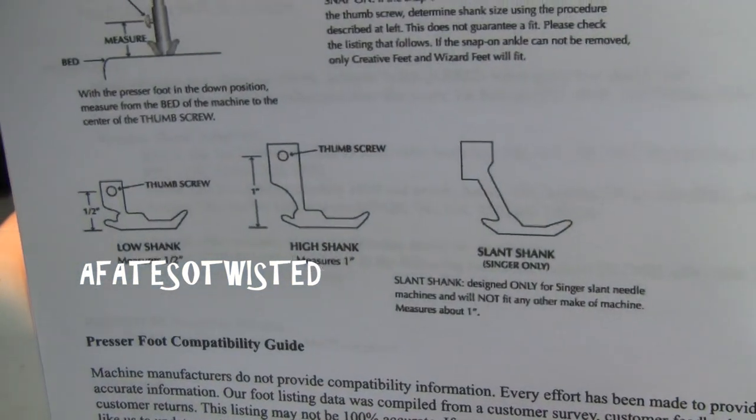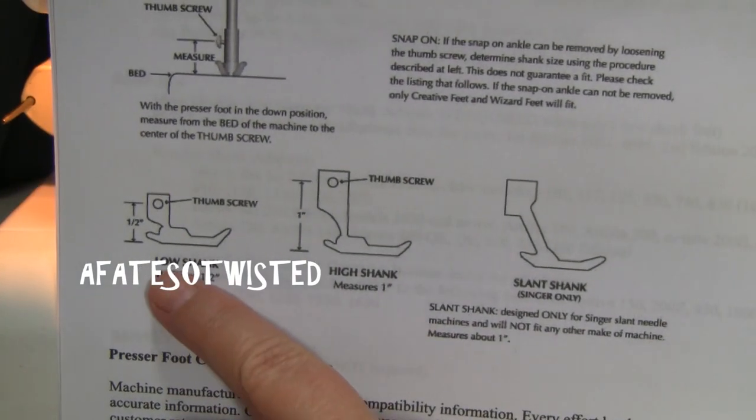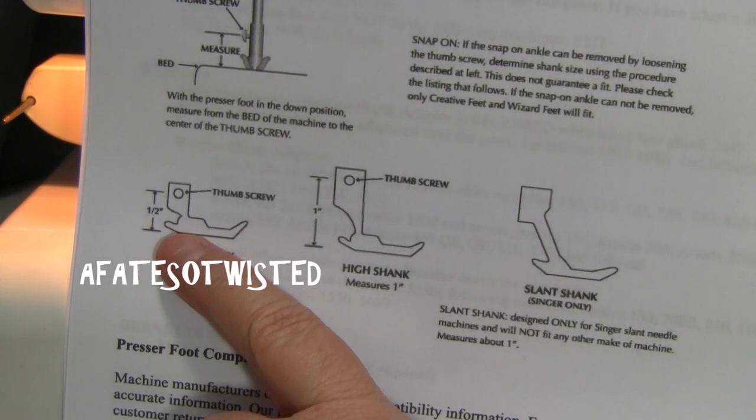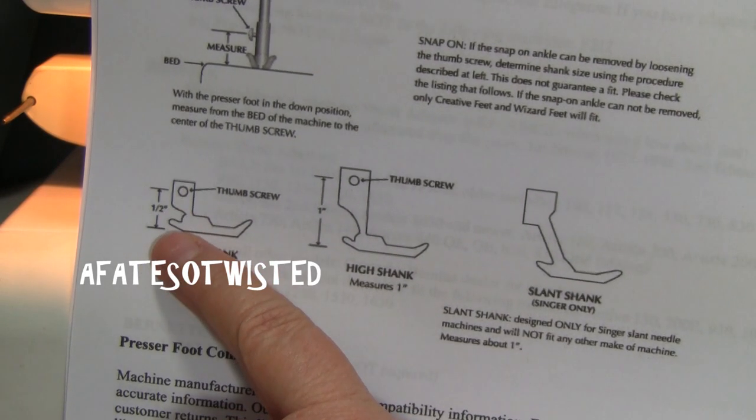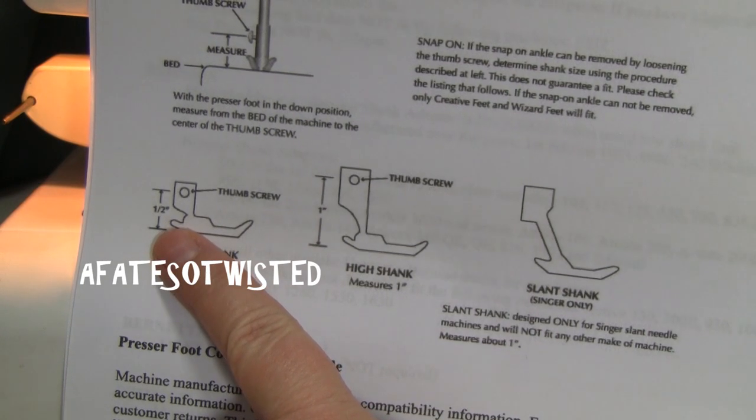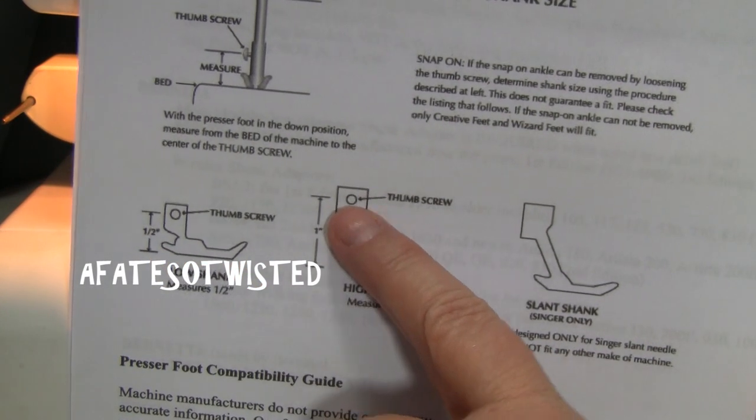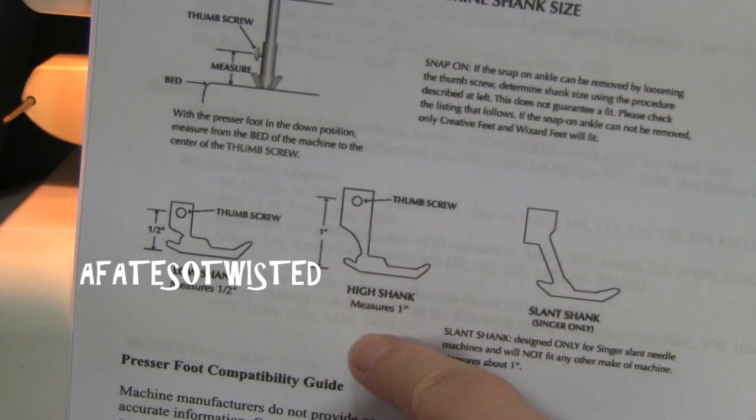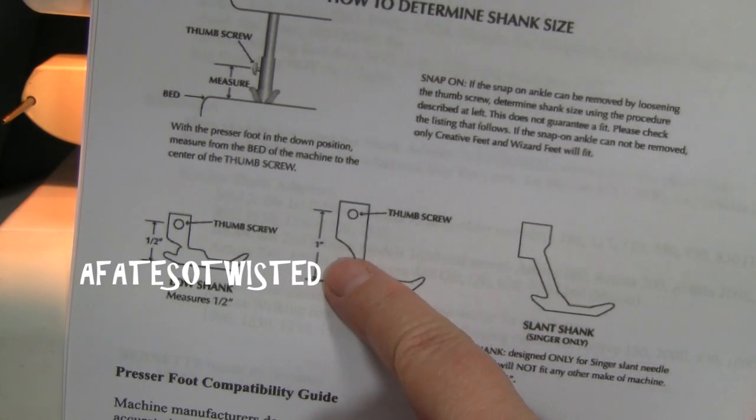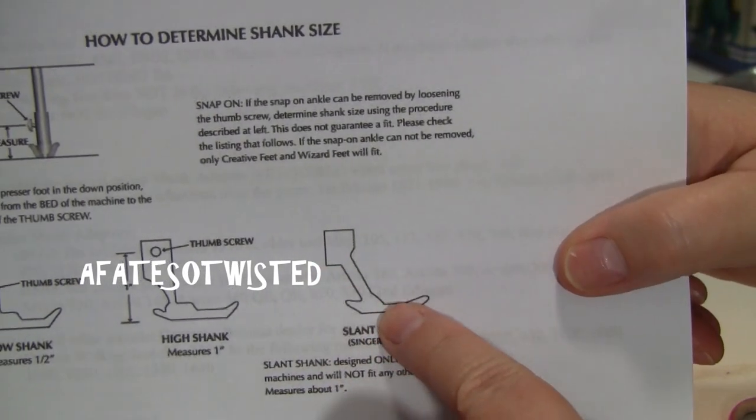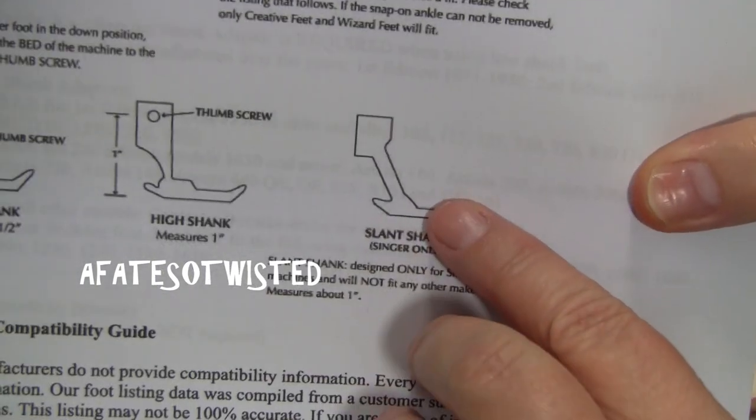Low shank is if you measure from the screw hole to the bottom of the presser foot, it's about a half an inch. That's going to be a low shank machine. If the screw hole to the bottom of the presser foot is an inch or more, I don't think it can be more, but if it's an inch, then you've got a high shank. And this of course, that's just kind of obvious, this is a slant shank.